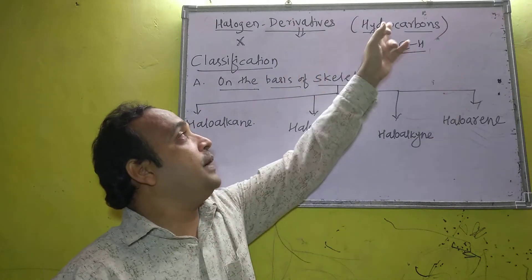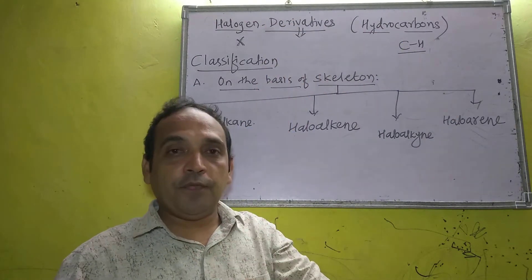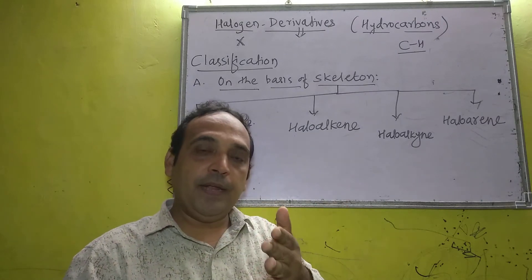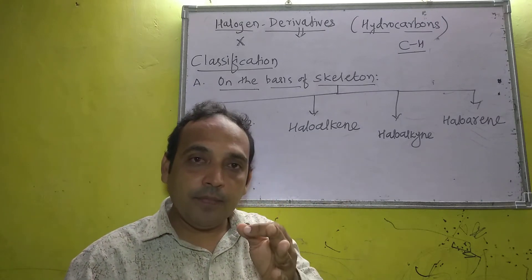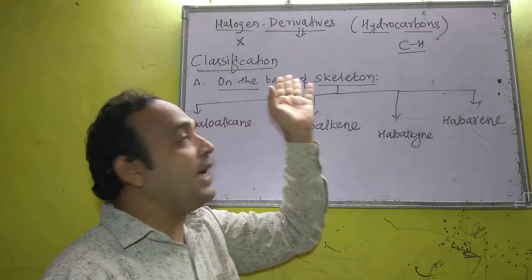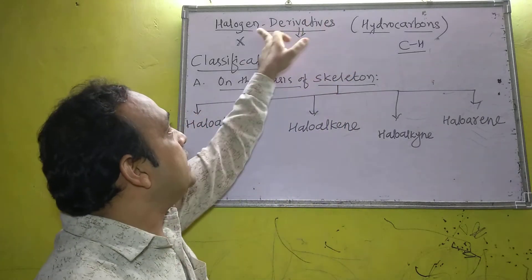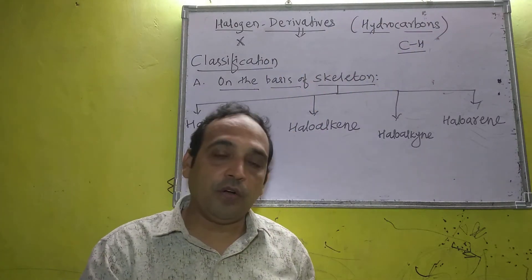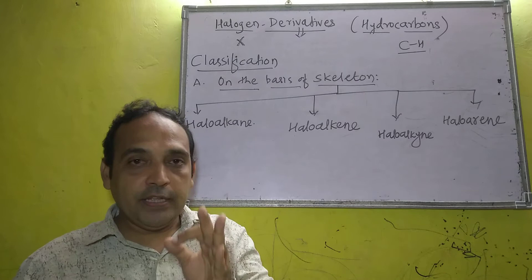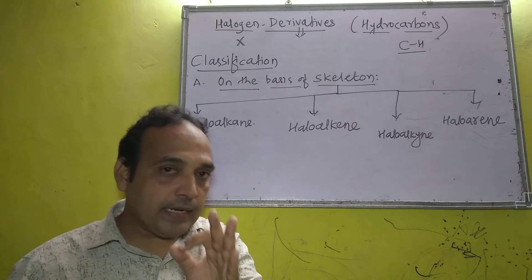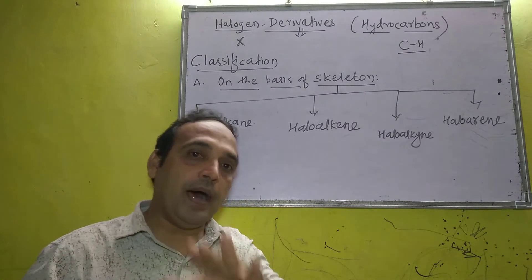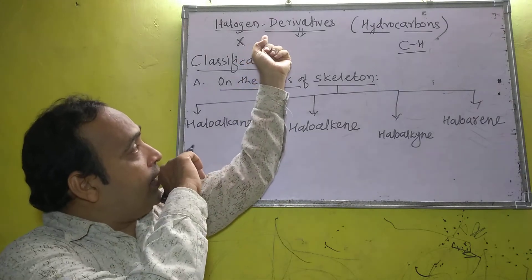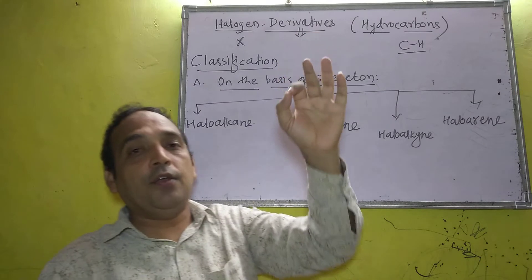Halogen derivatives of hydrocarbon are obtained from hydrocarbon by replacing one or more hydrogen atoms with halogen atoms. Replacement of hydrogen atom or atoms by halogen is called a halogen derivative of hydrocarbon.